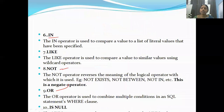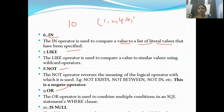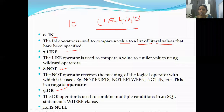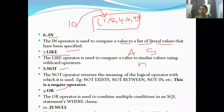The IN operator is used to compare a value to a list of specified literal values. For example, checking whether 10 is present among the values 1, 2, 4, 10, 100. Unlike ALL, you are not comparing with every value in a column — only with the values you specify. The LIKE operator is used to check name patterns — for example, names starting with 'A', ending with 's', or containing 'h'.